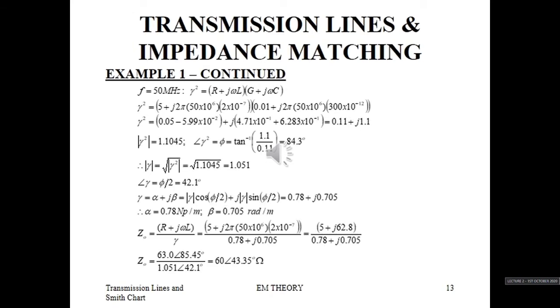When the frequency is 50 MHz, we replace 50 Hz with 50 × 10⁶. Gamma squared is now 0.11 + j1.1, so the magnitude of gamma squared is 1.1045 and the angle is 84.3 degrees. The magnitude of gamma is the square root of that, giving 1.051, and the angle of gamma is half of 84.3 degrees, which is 42.1 degrees. Therefore, alpha is 0.78 nepers per meter and beta is 0.705 radians per meter.